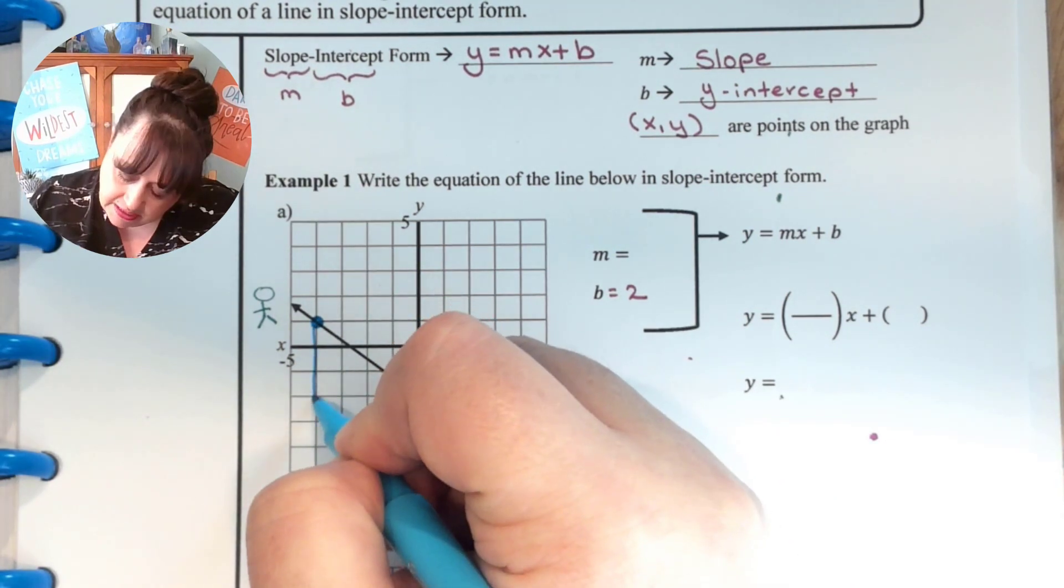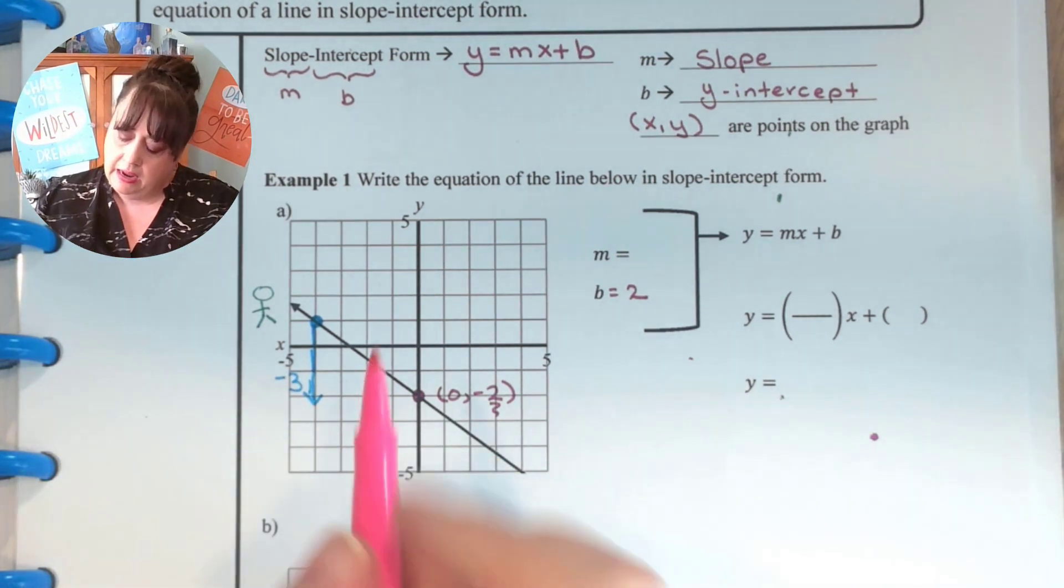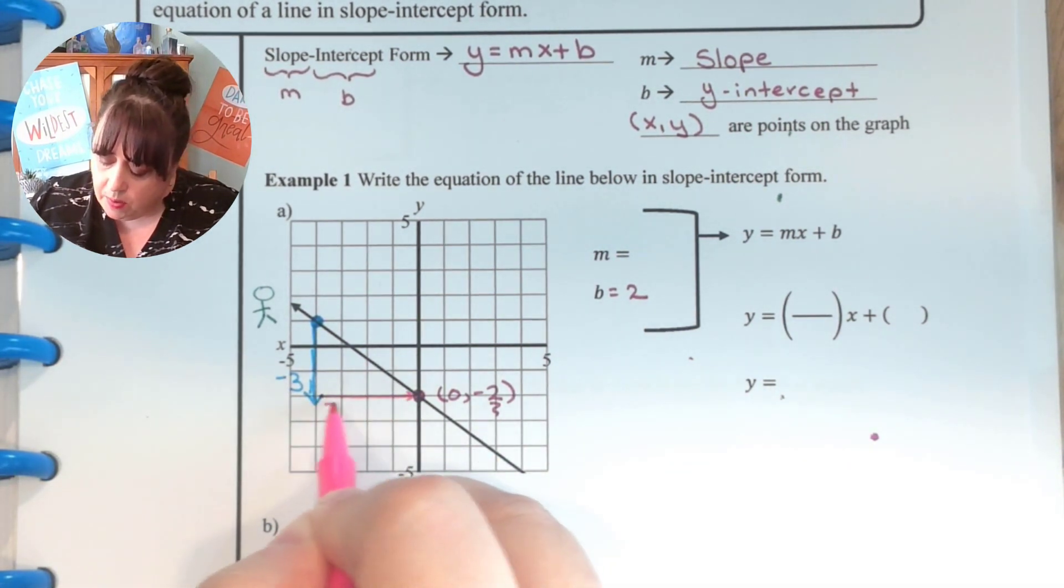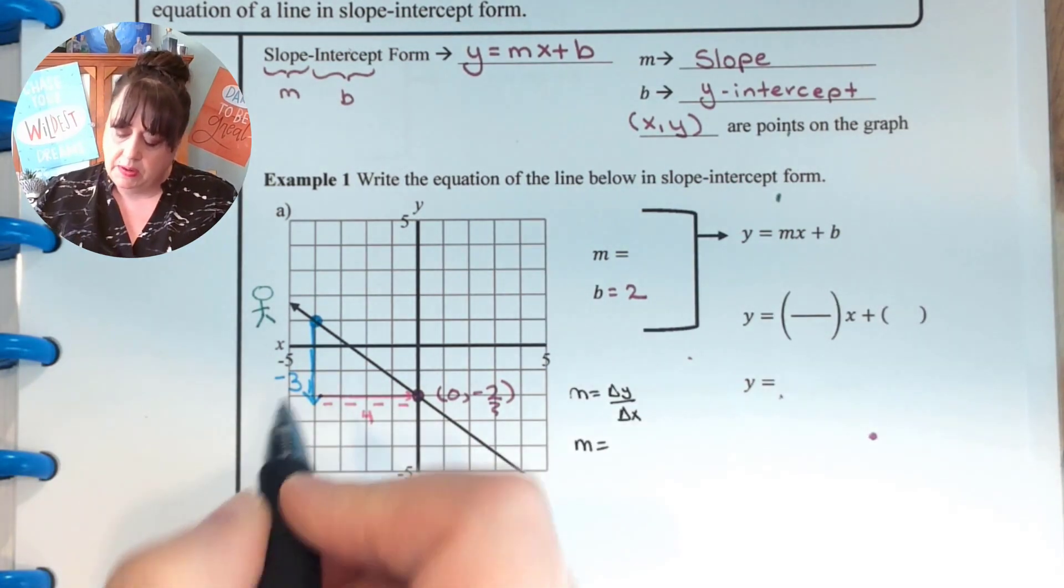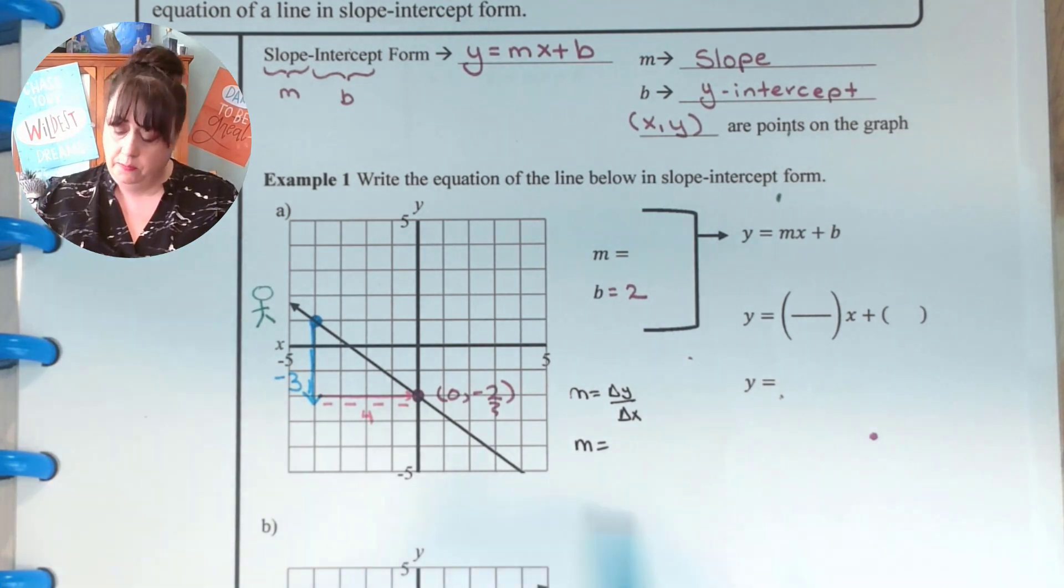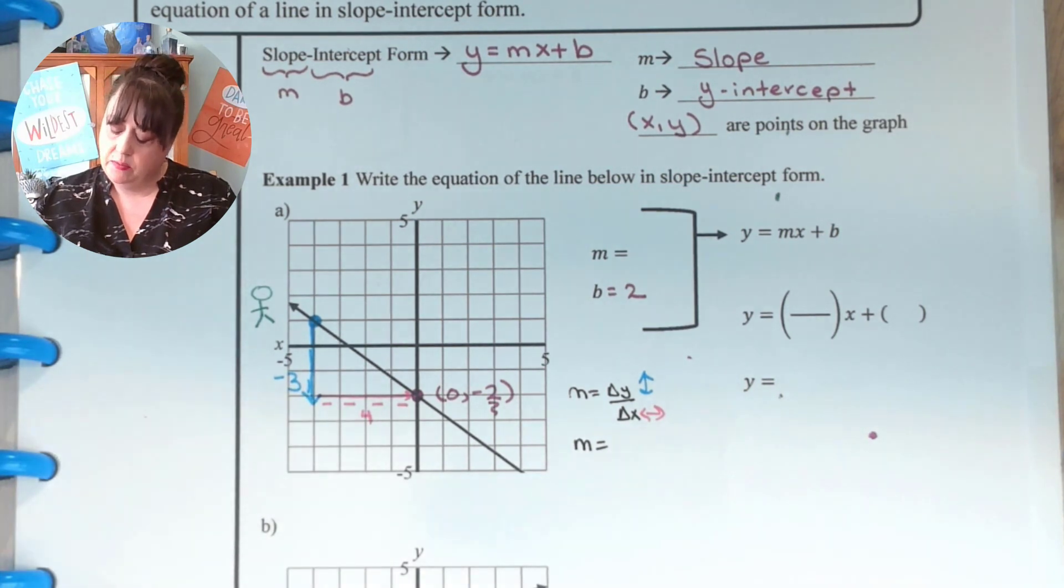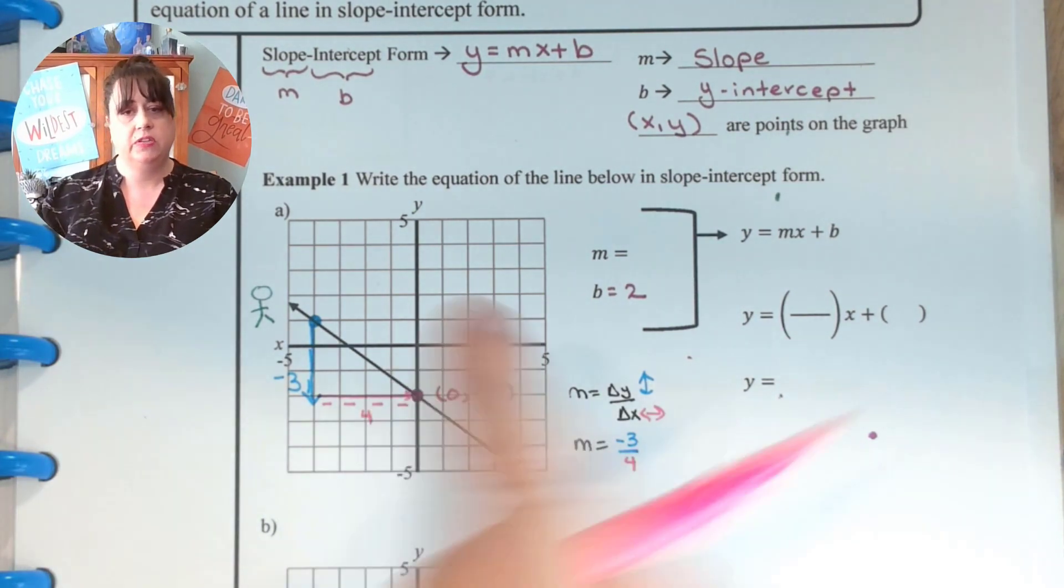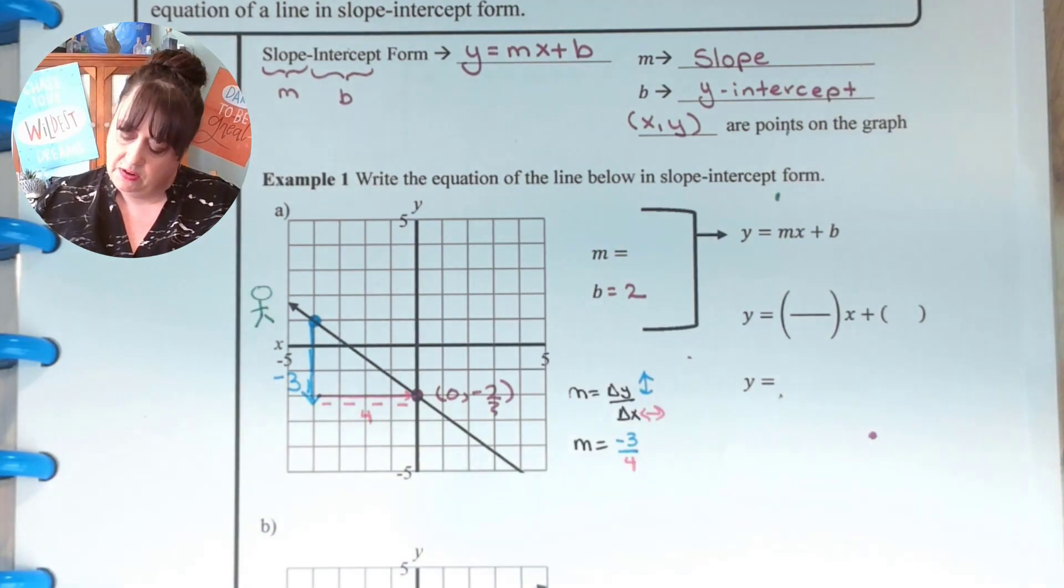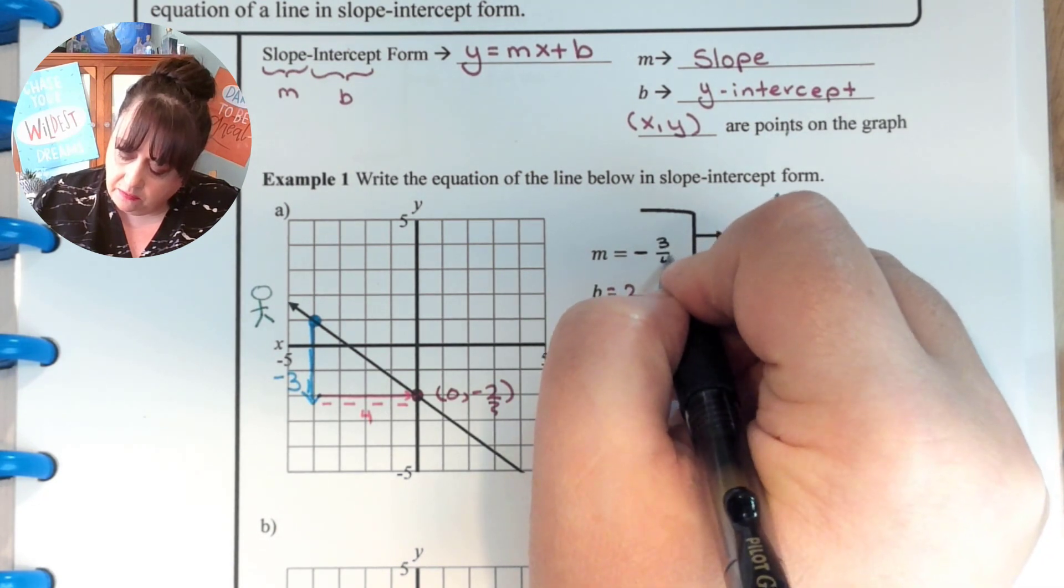And so I'm just going to count. How far did it take to go down? And so that was 1, 2, 3, so negative 3. And to go over was 1, 2, 3, 4. And so if we remember slope is delta y over delta x. So our delta y is how much you go up and down and our delta x is how much you go over. So our delta y we can see is negative 3 and our delta x was 4. This fraction does not need to be reduced. And so we are going to put it right there, negative 3 fourths.